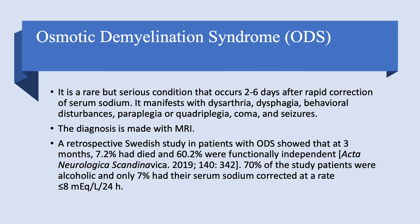Seventy percent of the study patients were alcoholic — again, alcoholism is a high-risk factor because alcoholics get severe hyponatremia, hypokalemia, malnutrition, and liver disease. They have all the risk factors. Only 7% of patients had their serum sodium corrected at a rate less than 8 mEq — meaning correction was faster than the recommended 4 to 6 mEq per 24 hours for high-risk patients.